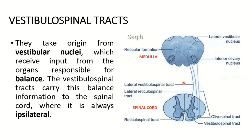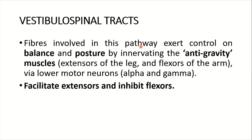As shown, the lateral vestibulospinal tract arises from the lateral vestibular nucleus, and the fibers come down without decussating, remaining ipsilateral. The fibers involved in this pathway exert control on balance and posture by innervating the anti-gravity muscles — extensors of the leg and flexors of the arm — via lower motor neurons alpha and gamma in the spinal cord anterior horn. The vestibulospinal tracts facilitate extensors and inhibit flexors.